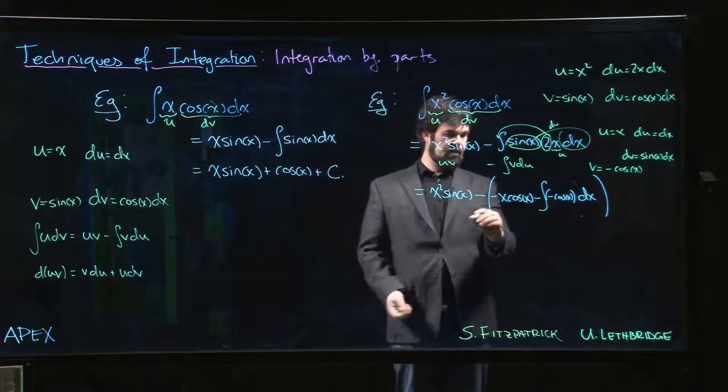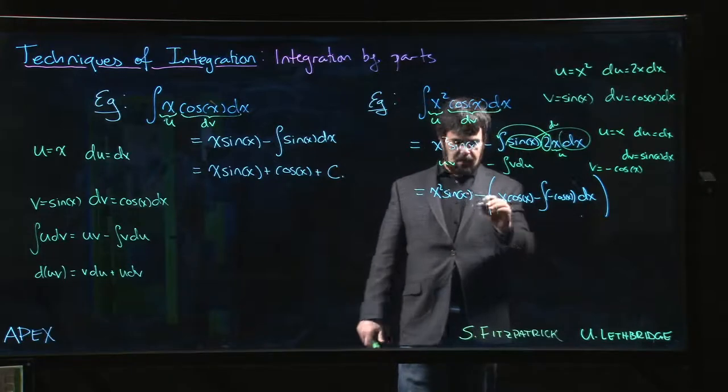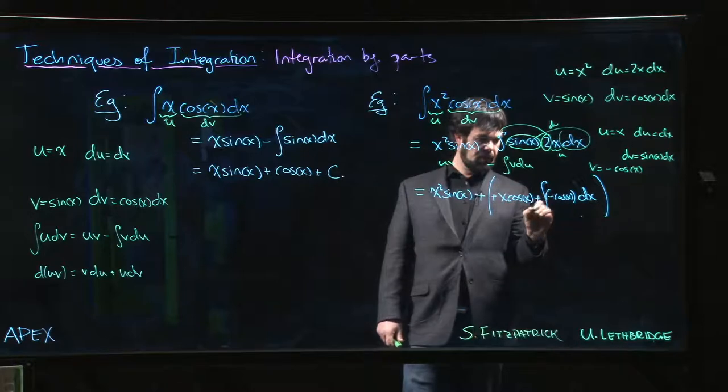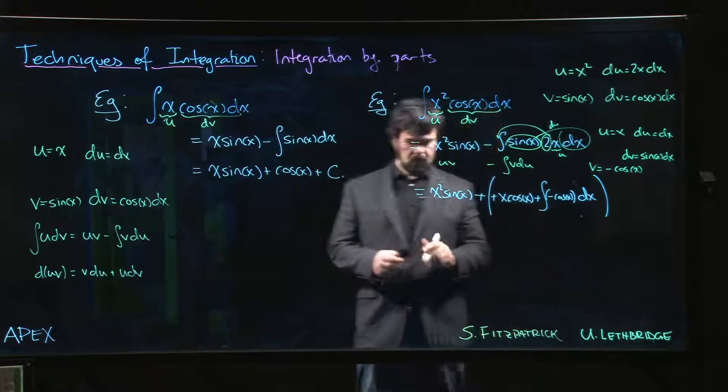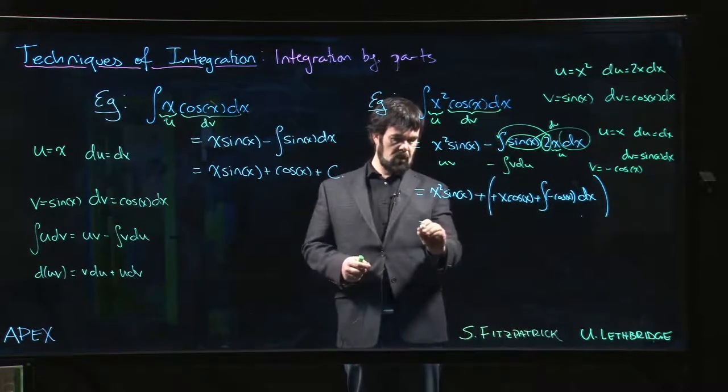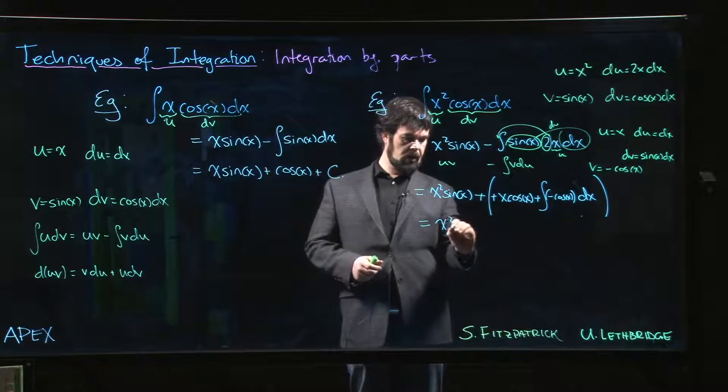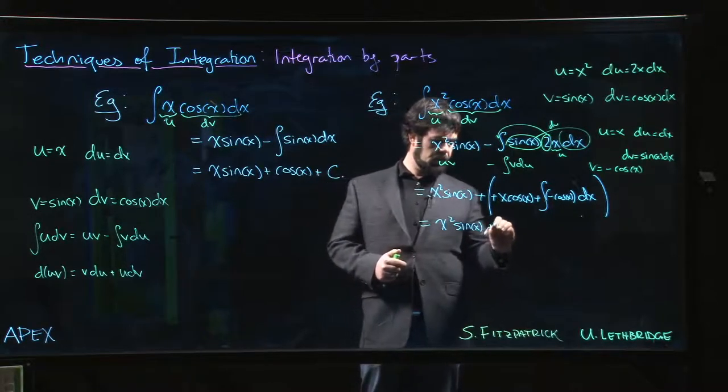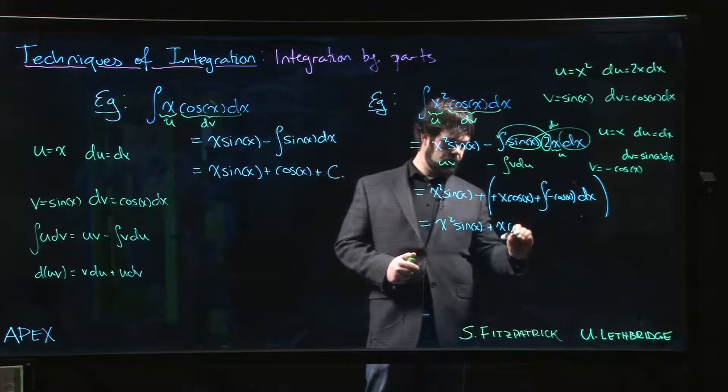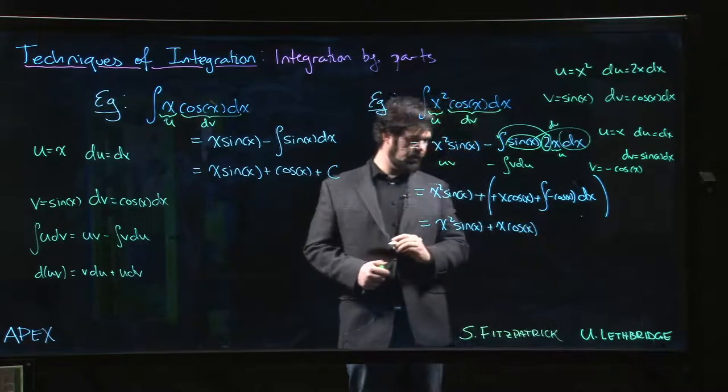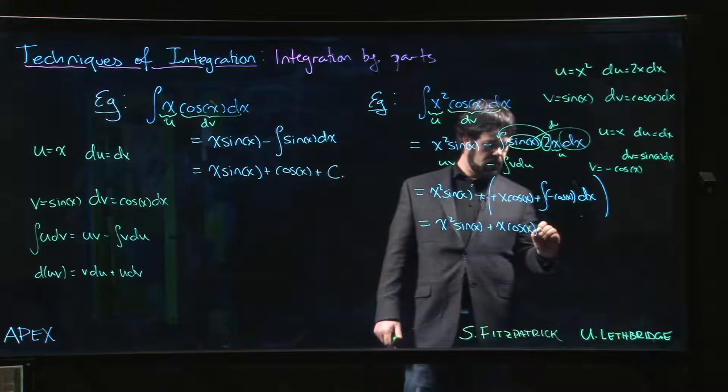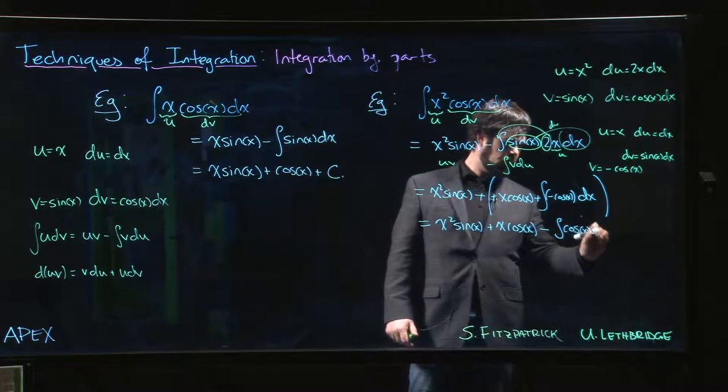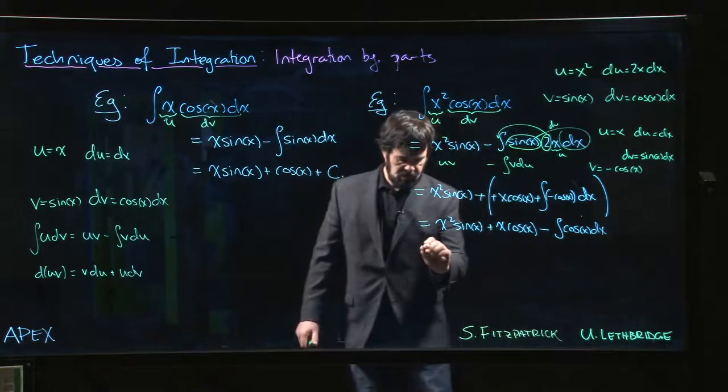So let's take care of minus signs here. Minus, minus, minus becomes plus. Minus, minus becomes plus, leaves me with one minus sign. So all told, I have x squared sine x plus x cos x minus the integral of cos x, and we know what that is, it's sine.